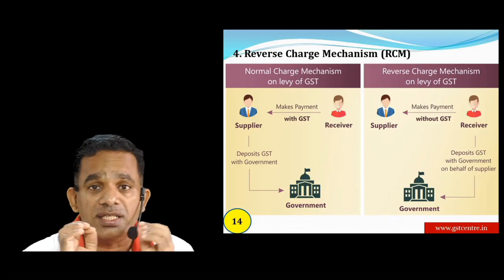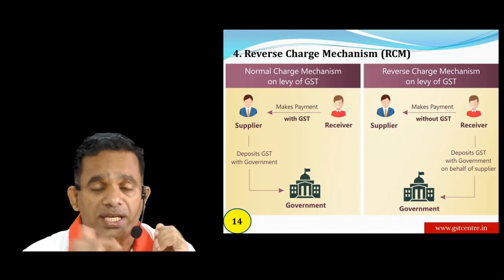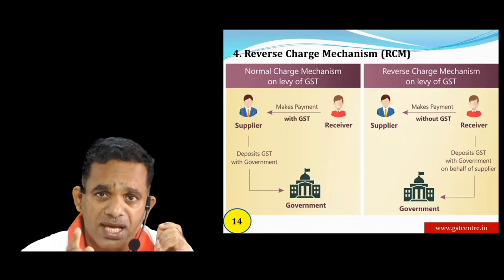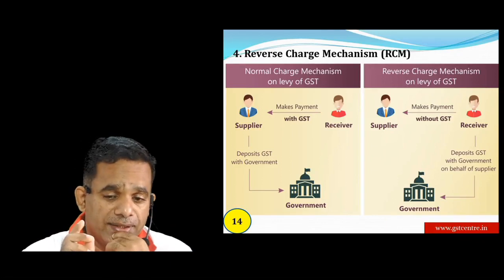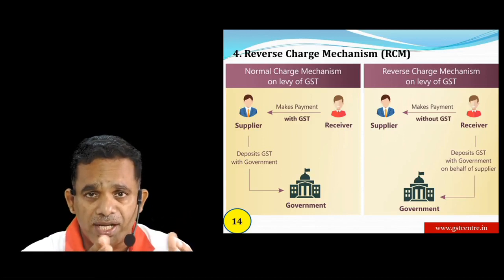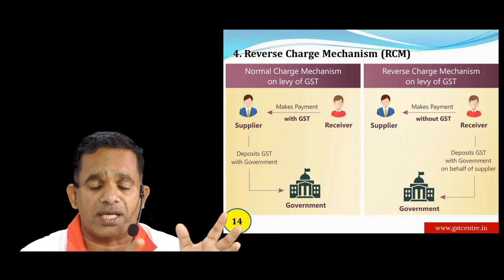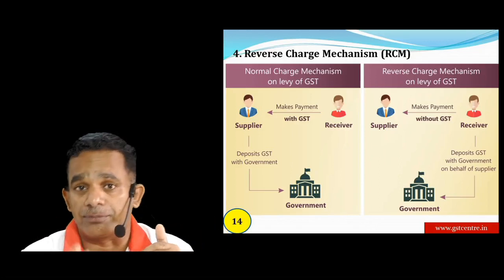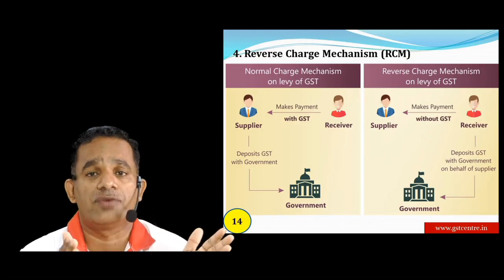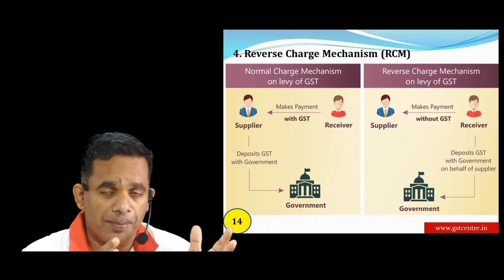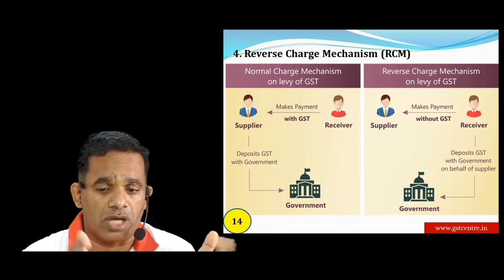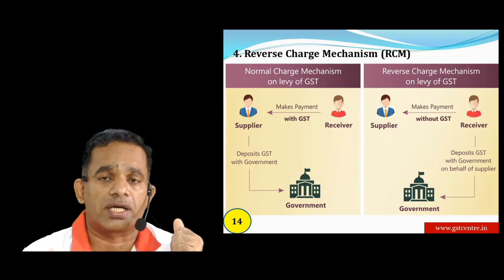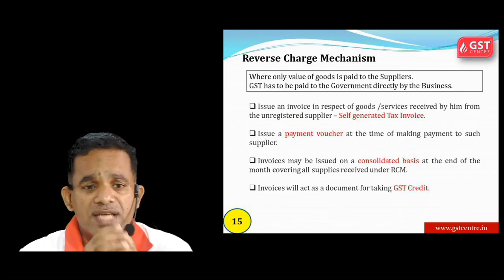Tax paid by the supplier on UEN holders will be refunded to them. In normal charge mechanism: supplier collects GST from receiver and pays to government. In reverse charge mechanism: receiver pays price to supplier, but the receiver/buyer pays GST directly to the government.